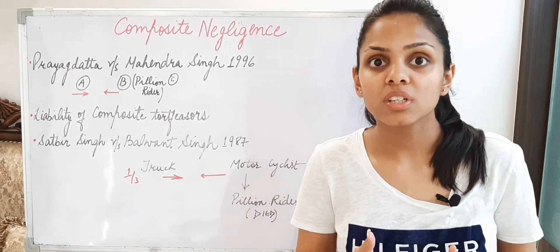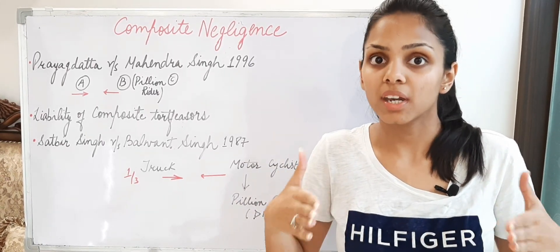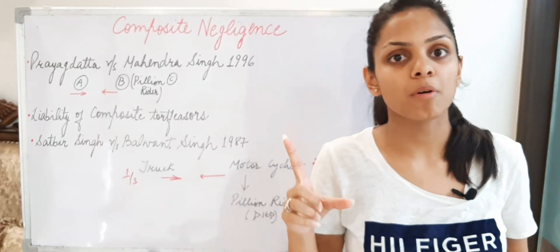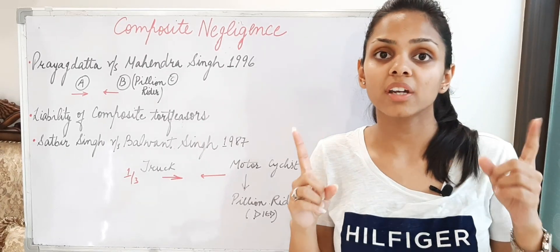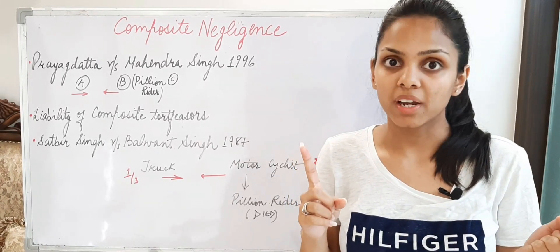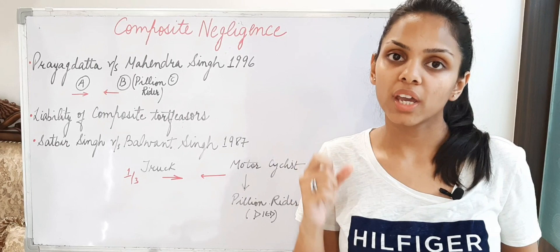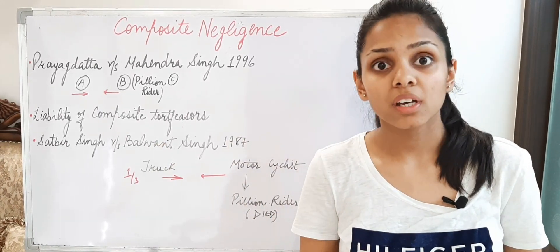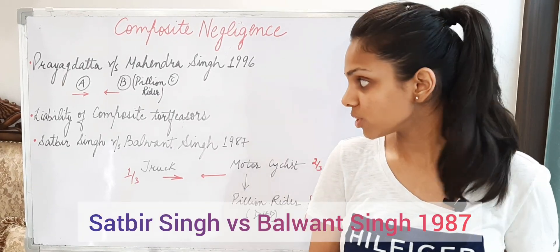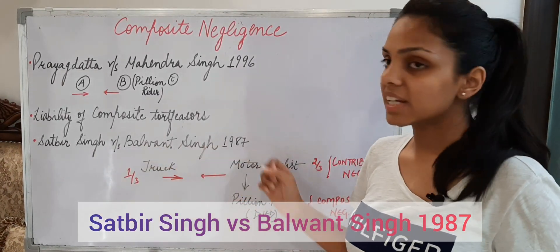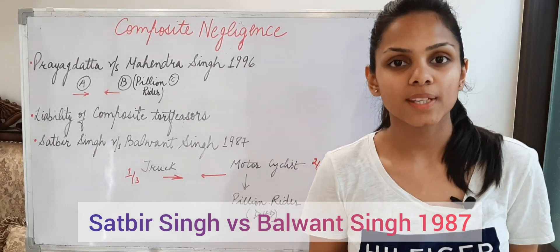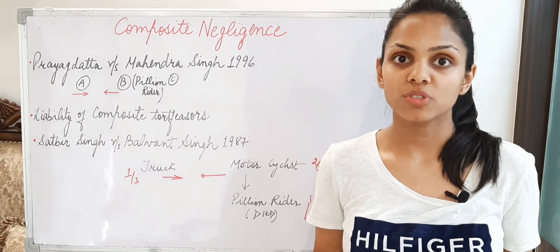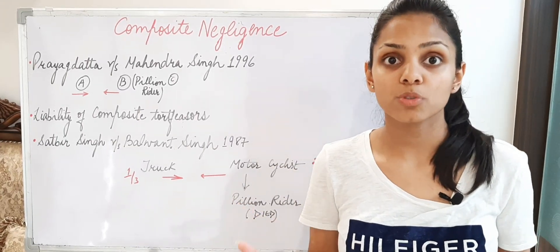Moreover, the court in a composite negligence case does not do apportionment — does not share out damages. They only pass a single decree — a single sum of money as compensation to be granted to the plaintiff. The sharing out afterwards can be done through subsequent judicial proceedings. Now I want to explain this further with the help of a case law which is Satbir Singh versus Balbant Singh, 1987. This case is quite interesting. In it you will be able to understand both contributory and composite negligence and the differentiation between the two.